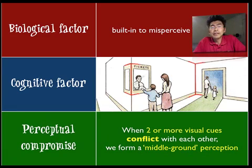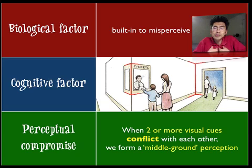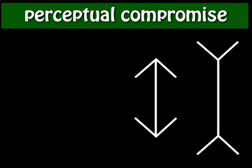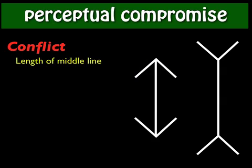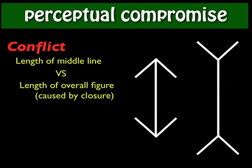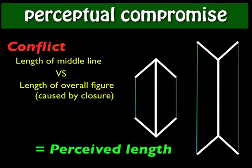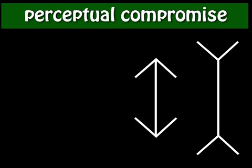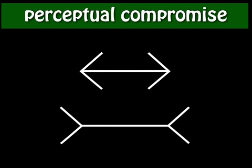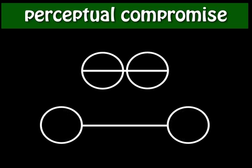The third theory is the perceptual compromise theory, where when two or more visual cues conflict with each other, we form a perception by taking the middle ground in what we see. The conflict between the length of the middle line versus the length of the overall figure caused by closure results in us perceiving the middle line as longer for figures with a greater overall length. This theory also explains the illusion when the tips are replaced with circles, something the cognitive factor theory cannot explain.